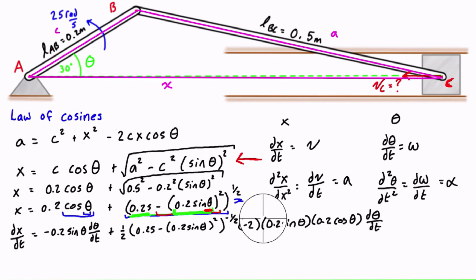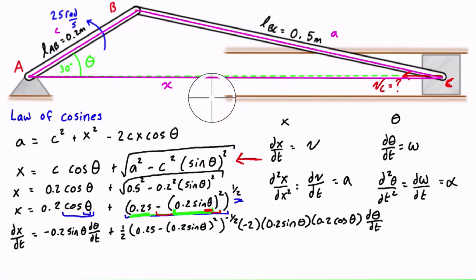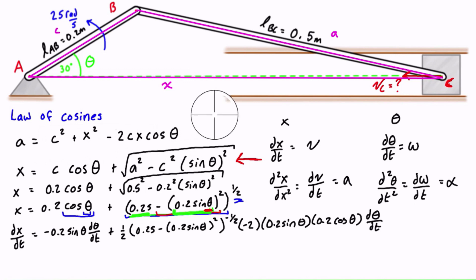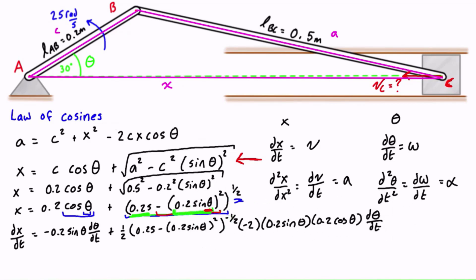Basically, with the chain rule we always take the derivative of the outside and multiply by the derivative of the inside. When the inside also contains differentiable parts, it just keeps going. In this case we had to apply the chain rule three times until the whole expression is fully differentiated.